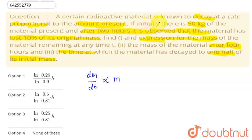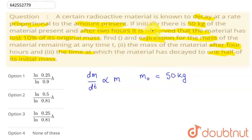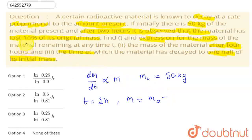We have given that its initial mass is 50 kg. So we can say m0 represents m at time 0. Initially it is given as 50 kg. And in the third condition, we have given that after two hours, it is observed that the material has lost 10% of its original mass. So when t equals two hours, m is equal to m0 minus 0.1 m0, which is 0.9 m0.